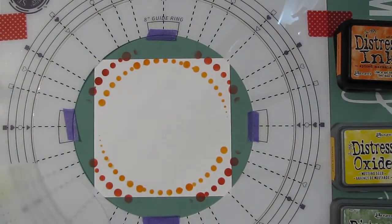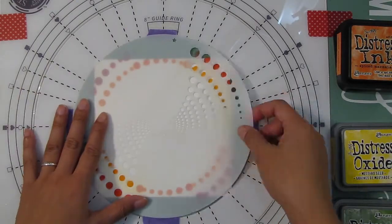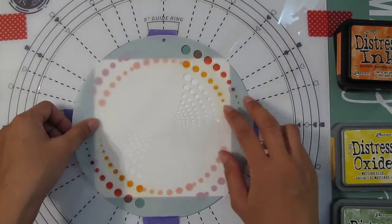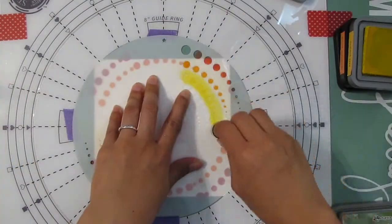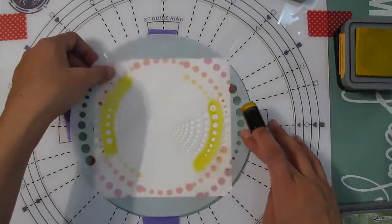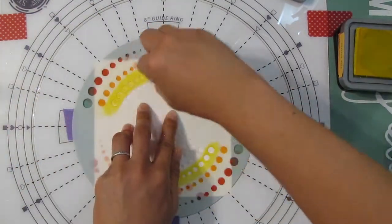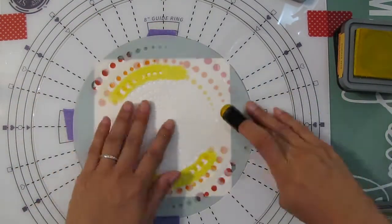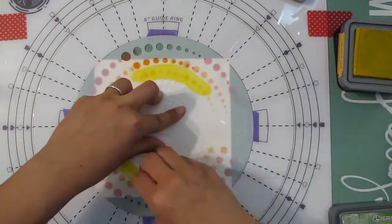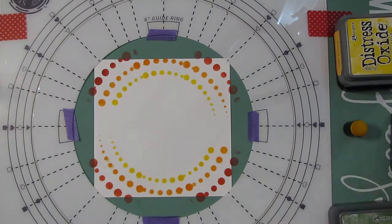The first outer color is Fired Brick in Distress Ink. I find that Distress Ink is a lot more darker and richer compared to the oxide ink for that particular color. The second color, the orange, is Spiced Marmalade in Distress Ink, and then the yellow is a Distress Oxide ink, Mustard Seed.